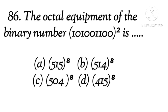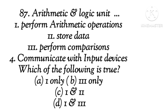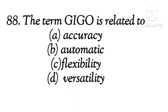Question 86: The octal equivalent of a binary number is dash. The right answer is B. Question 87: A arithmetic and logic unit. The right answer is B, first and third. The term G.I.G.O. is related to the right answer is A, accuracy.